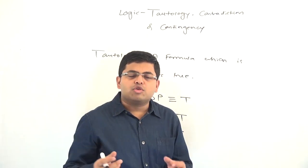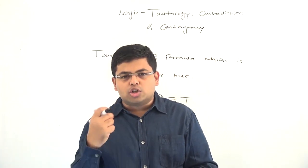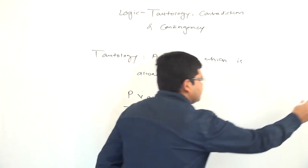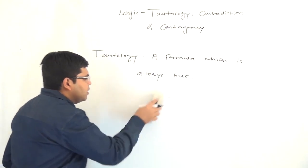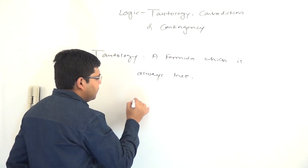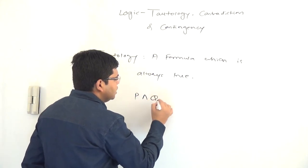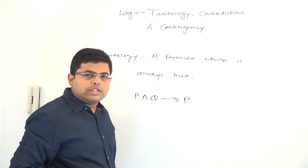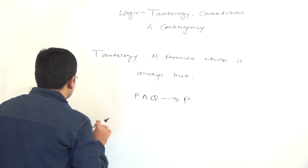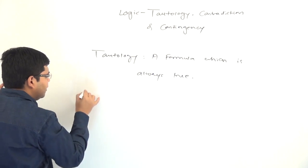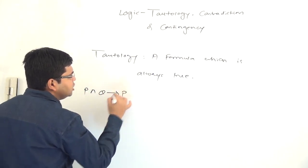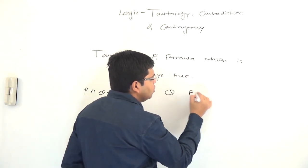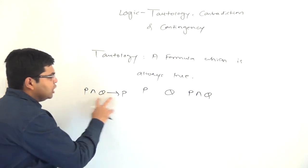If you draw the truth table for a tautology, then the final column will contain all true values. For example, let us consider the implication p∧q → p. This particular formula is a tautology. To verify, we draw the truth table with columns for p, q, p∧q, and p∧q → p.